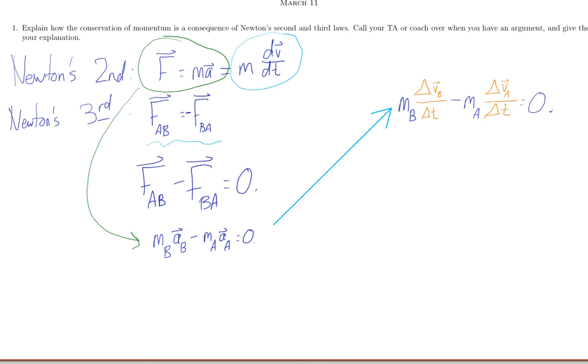So here I'm imagining two objects exchanging a force over some amount of time, delta T. And I have this relation about the change in their velocities.